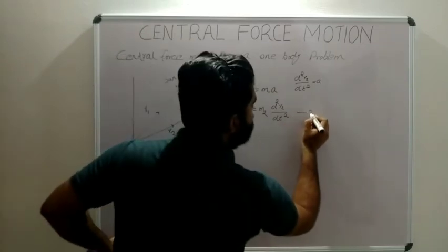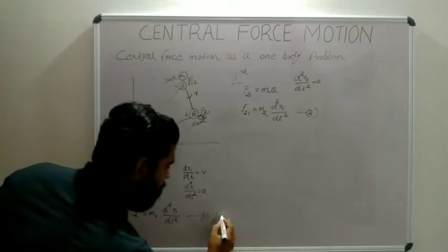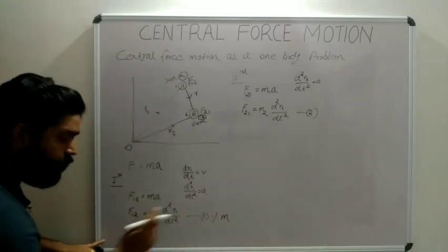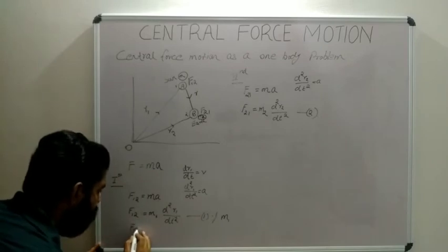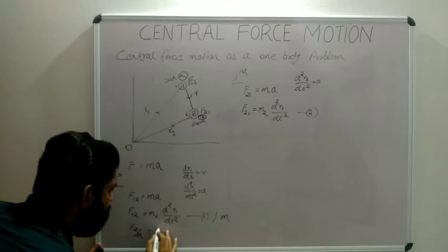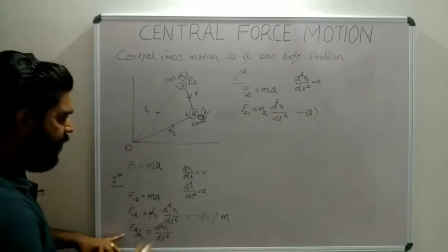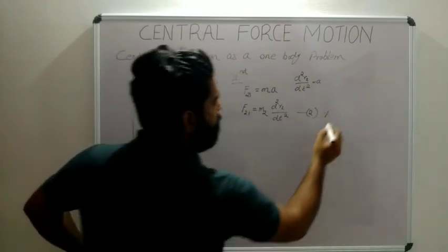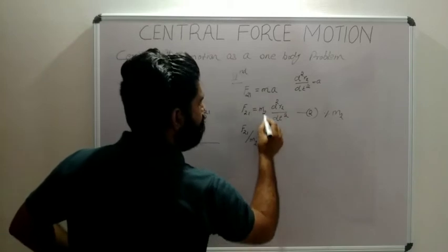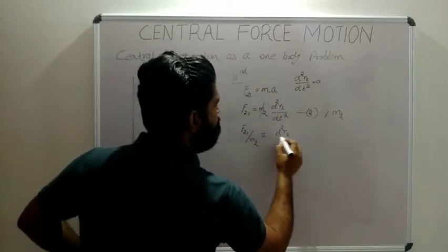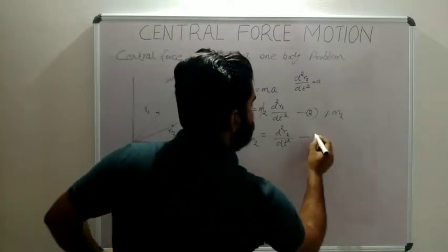Dividing equation one by mass m1, we get F12/m1 = d²r1/dt². Similarly, dividing the second equation by mass m2 gives F21/m2 = d²r2/dt². These are our equations three and four.